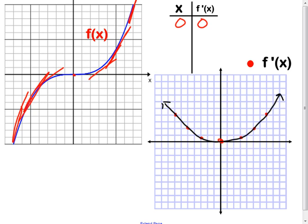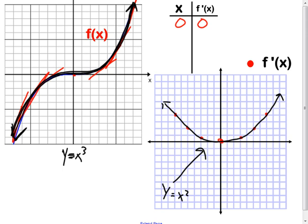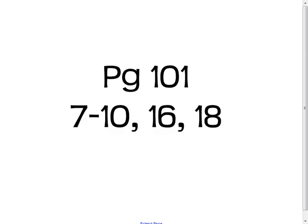Looking back at our derivative graph, I think you can recognize what's going on here — it looks like a parabola. So if I sketch the parabola, this is the derivative. For the advanced student, you should know this graph looks much like y equals x cubed. You should also know the derivative graph looks a lot like x squared. The derivative went from the third power to the second power — the degree goes down by 1. That's something we're going to talk about in length in the near future. Assignment: page 101, problems 7 through 10, 16 and 18.